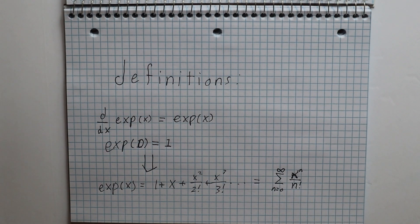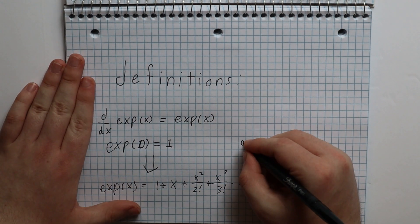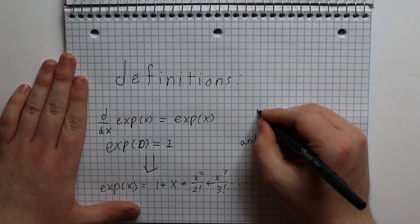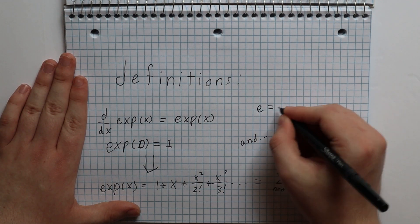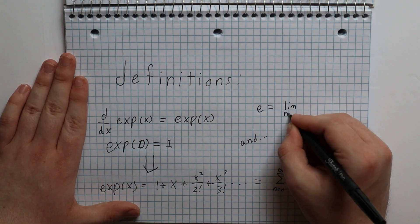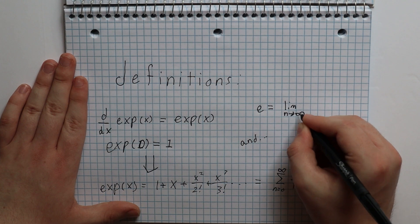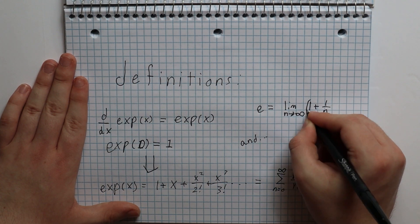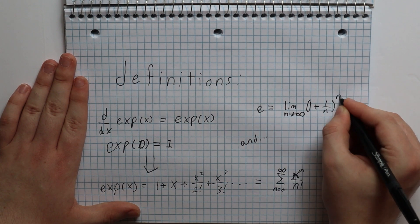For the second definition, we will define e as the limit as n approaches infinity of 1 plus 1 divided by n, to the power of n. Enough about definitions — let's get straight to the proof.